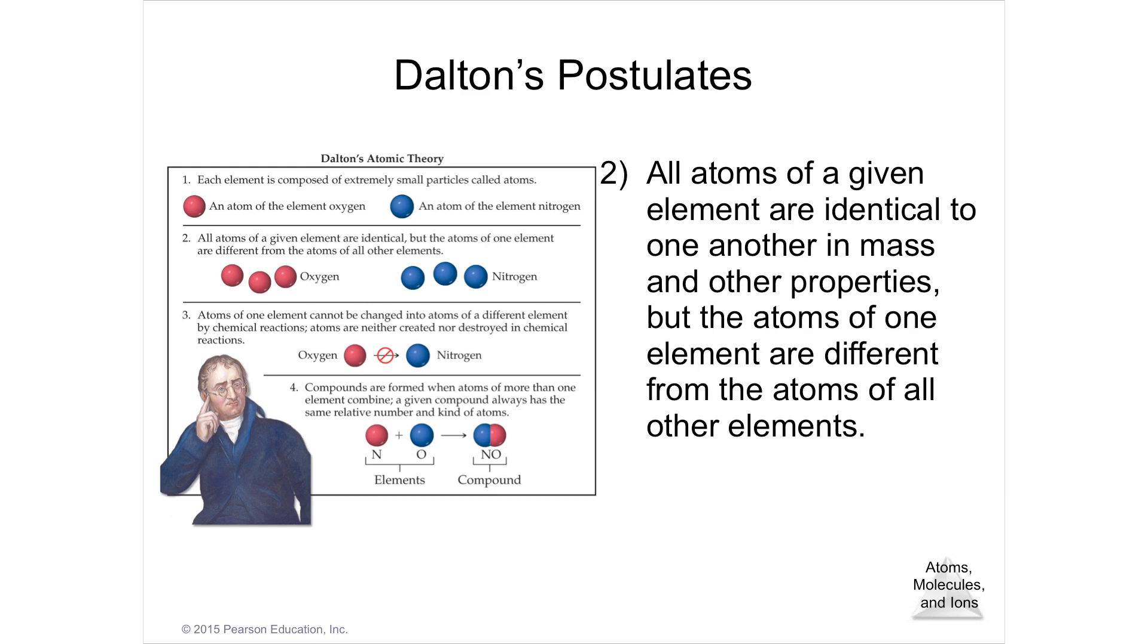His second postulate is that all atoms of a given element are identical to one another. So oxygen is oxygen is oxygen. No matter where it's from, there's not a different flavor. They're identical to each other in mass and all its other properties. But the atoms of one element are different from the atoms of all other elements. There are about 118 different types of matter in the universe.